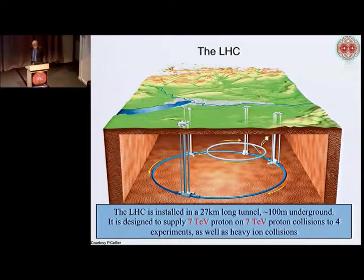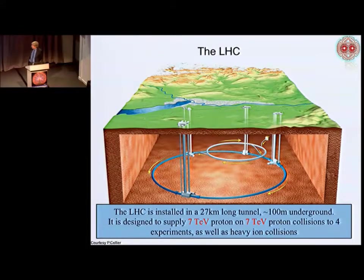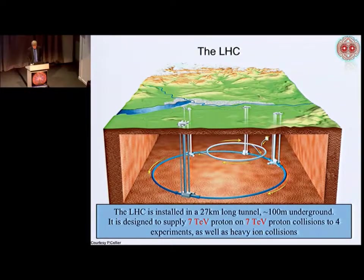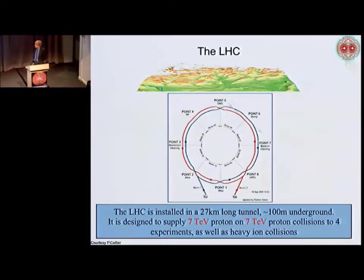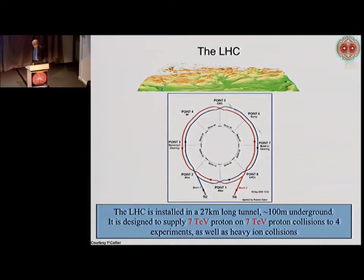So let's look at the LHC. You've all heard about it. It's a 27-kilometre tunnel under the Alps near Geneva, designed to supply 7 TeV protons in head-on collisions. It's now running at 6.5 TeV per beam, so we're almost there. Some of the experts are sitting in the audience, so if you've got any questions I'll point you to them.